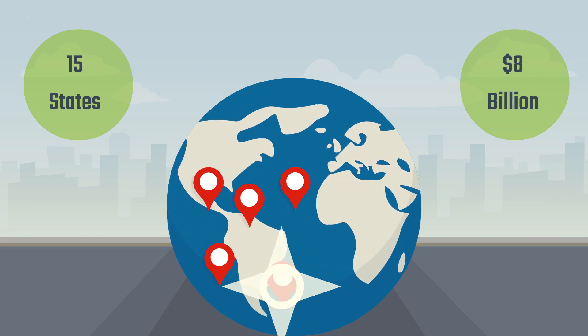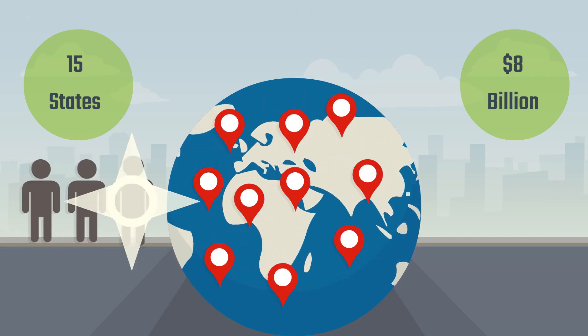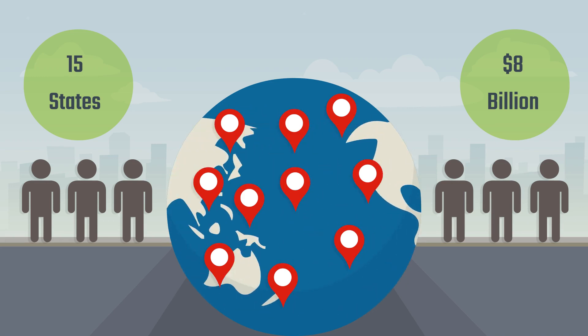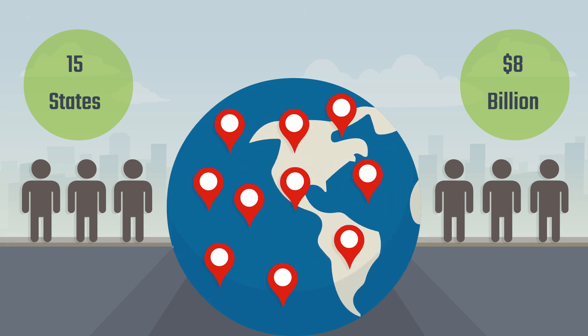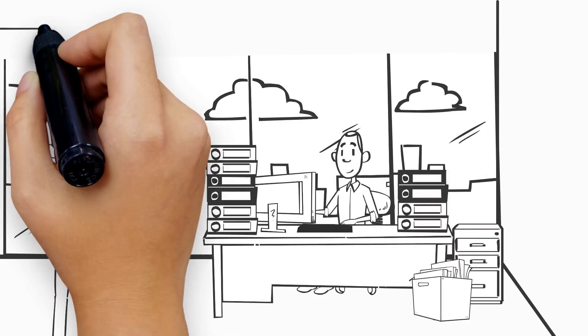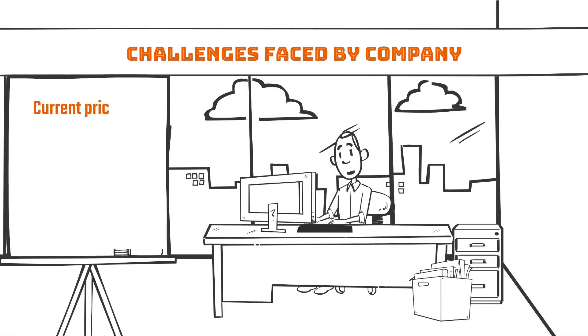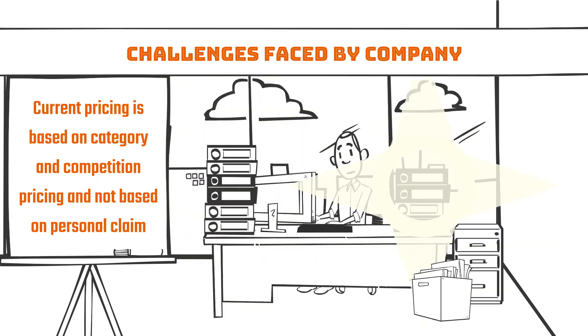One of the largest multinational general insurance companies today operates in 15 states within the US with premium revenue of about 8 billion dollars in the previous year. Challenges faced by company: current pricing is based on category and competition pricing.